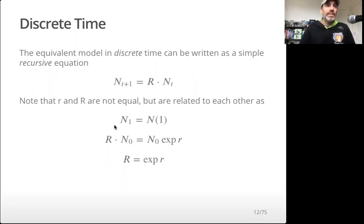If we just do a little bit of math, if N at time one in the discrete time model is equivalent to N at time one in the continuous time model, on the discrete time model, that's just R times N at time zero. In the continuous time model, that's N_0 exponent to the r times one, because time equals one. The N_0 cancels out and we see that the big R is just the exponent of the little r. Same concept just expressed on different units in discrete time.